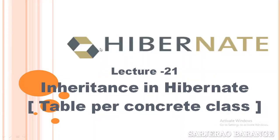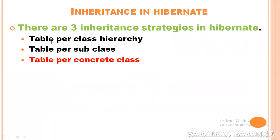Hello everyone, you are watching a video on Hibernate. This is lecture number 21 on Hibernate. In this video we will discuss inheritance in Hibernate. We will discuss the Table Per Concrete Class strategy. There are three inheritance strategies in Hibernate: first, Table Per Class Hierarchy; second, Table Per Subclass; and third, Table Per Concrete Class. The first two strategies have already been discussed, and now we will go for the third strategy.